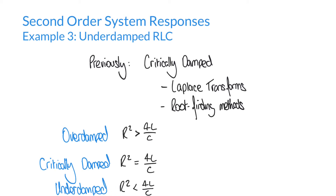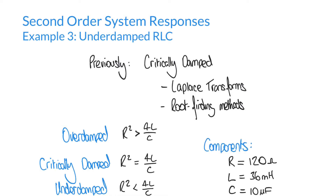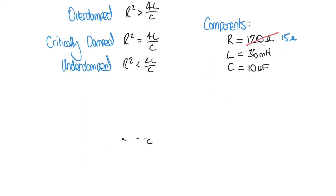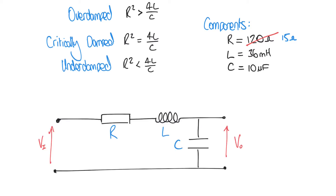Previously we used a resistance value of 120 ohms. We're going to leave the other components the same but reduce that resistance down to just 15 ohms. So we have R equals 15 ohms, L equals 36 millihenries — that hasn't changed — and C equals 10 microfarads, which hasn't changed either. If you haven't watched our previous videos, I recommend doing that first.